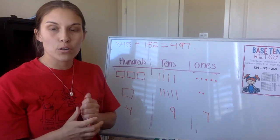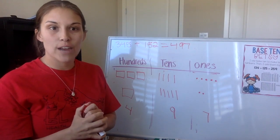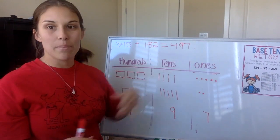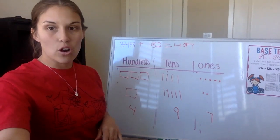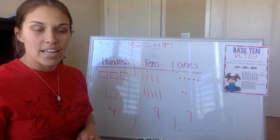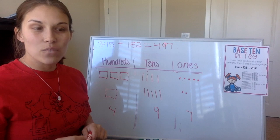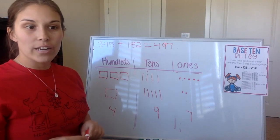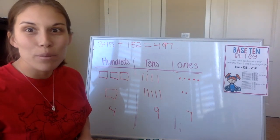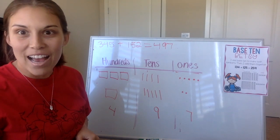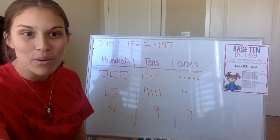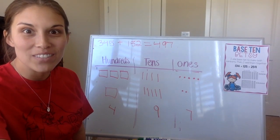All right boys and girls, this was our first strategy for adding three-digit numbers today. Base Ten Betsy is our first strategy. Our next lesson will be learning about a new strategy called Number Line Niles. Can't wait to share it with you — hope you have a wonderful rest of your day.